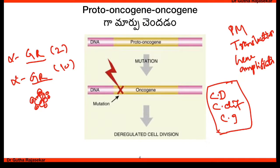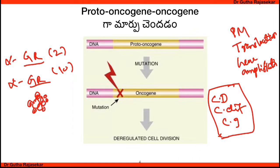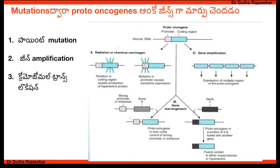This is a proto-oncogene. There are point mutations, translocations, and gene amplification. Mutations can occur in the promoter region, coding region, or structural gene region of a proto-oncogene. This is called a proto-oncogene mutation.